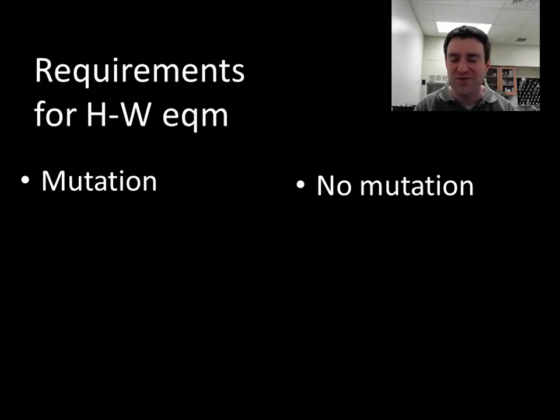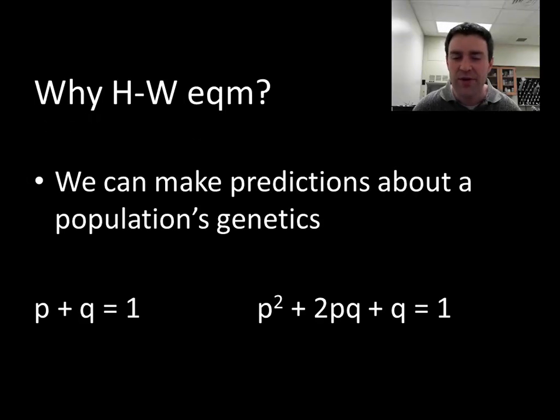So with some of those requirements, you might be thinking, why is this useful again? Because it seems like that would be impossible for any population for there never to be mutation and for our population to be infinite in size. So it really is kind of an ideal model, no doubt, but sometimes real populations get close enough to those requirements that we can say a population approximates Hardy-Weinberg equilibrium.